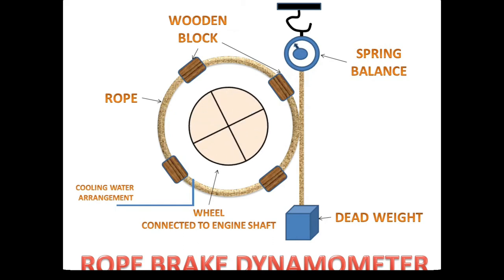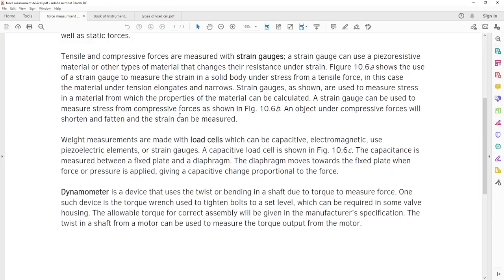The dead weight goes downward and the meter shows us the reading of how much power is absorbed by the wheel. So the rope brake dynamometer uses a rope and wooden blocks for measurement of wheel power. We stop here - we have discussed the devices for measuring forces. Thank you for listening and waiting for the next lecture. Assalamu alaikum.